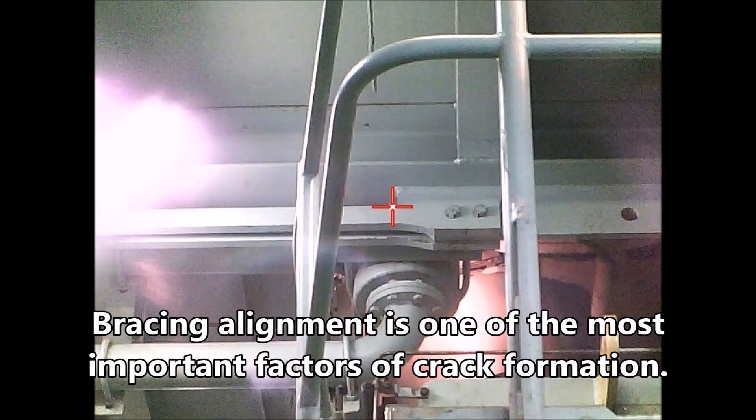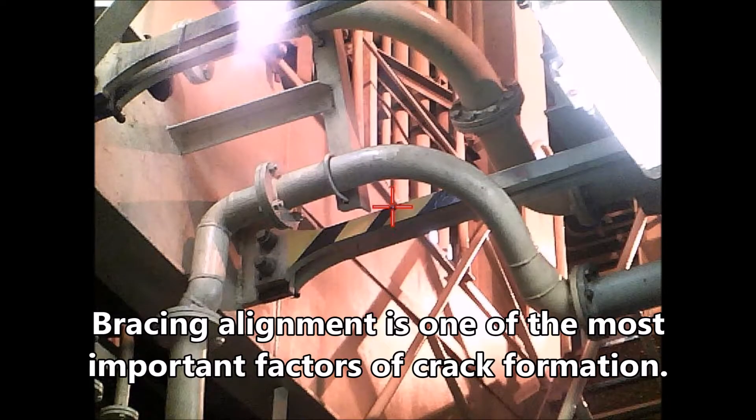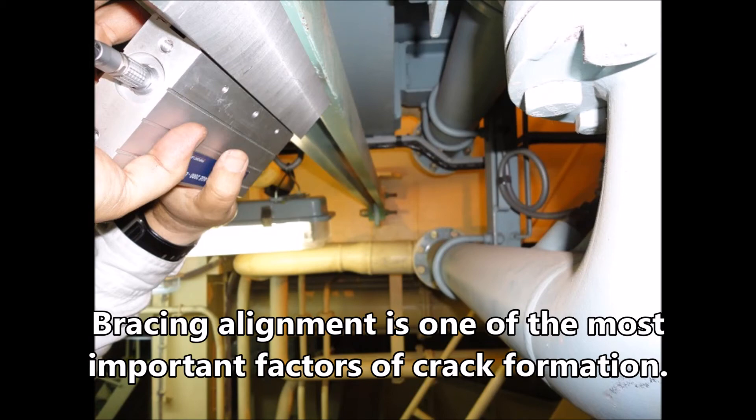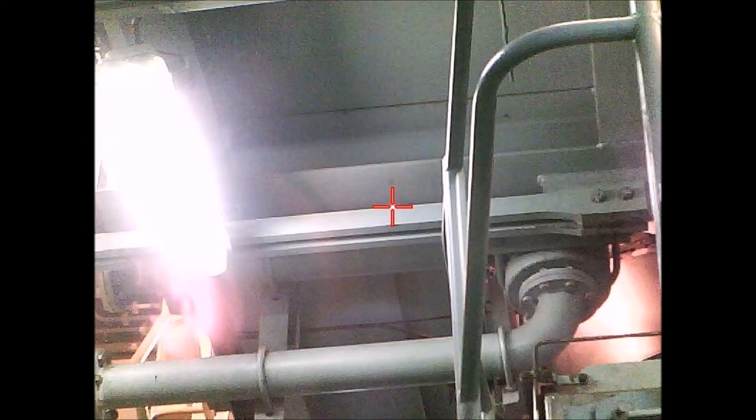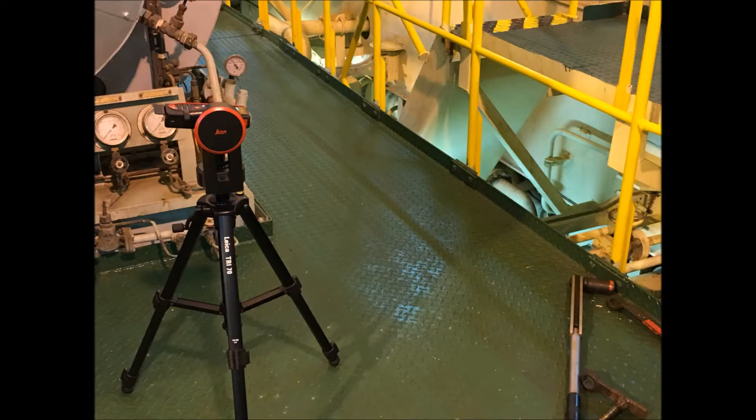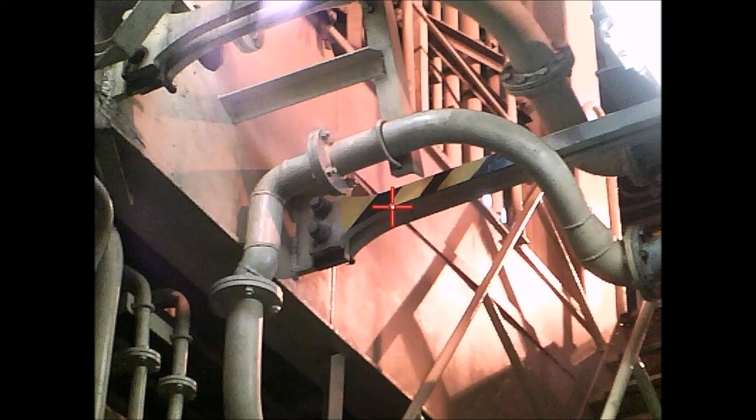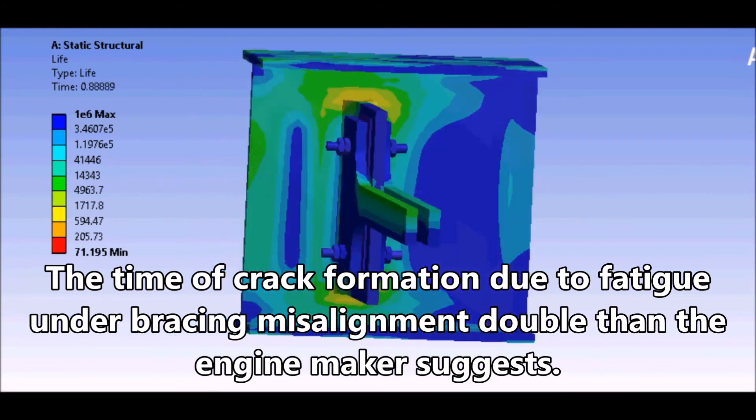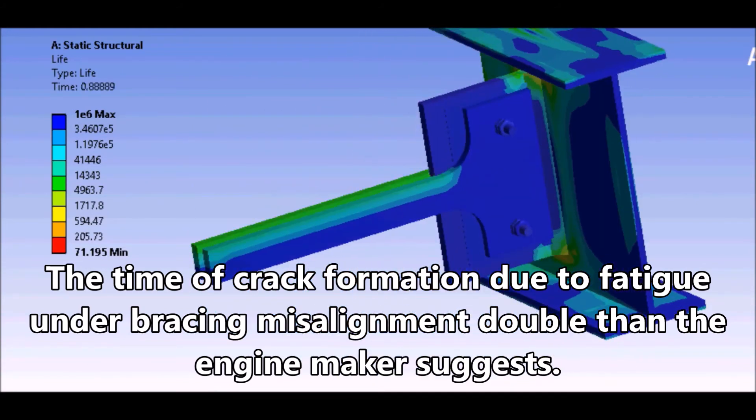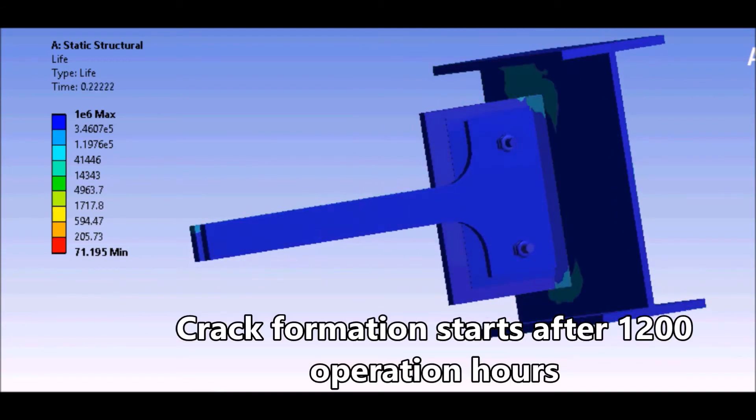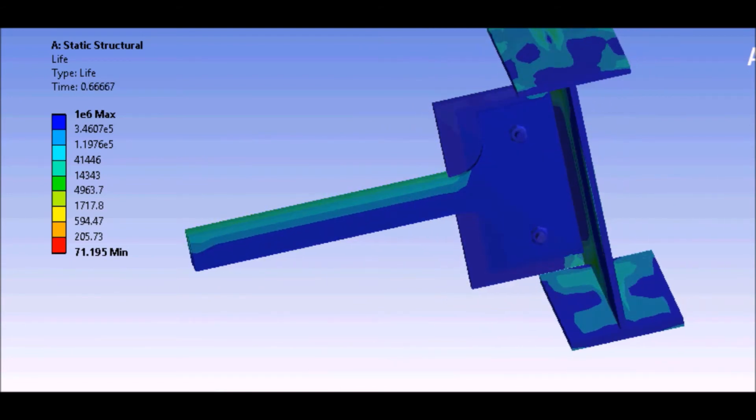Bracing alignment is one of the most important factors of crack formation. The time of crack formation due to fatigue under bracing misalignment is double what the engine maker suggests. Crack formation starts after 1200 operation hours.